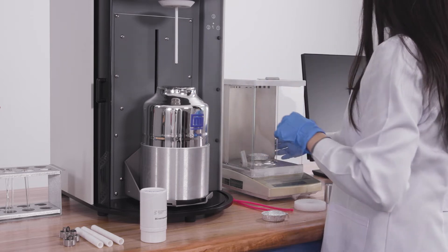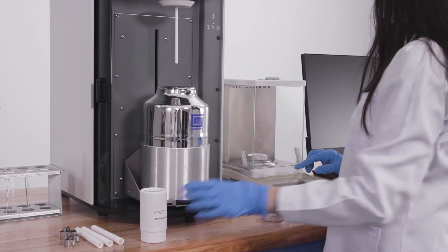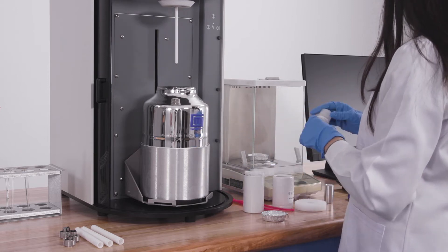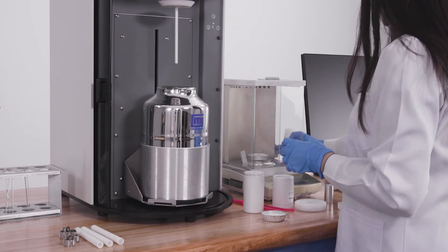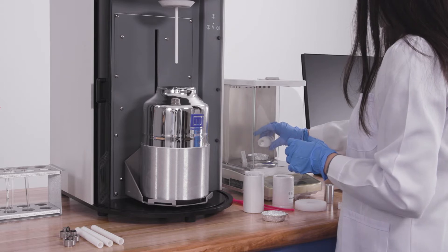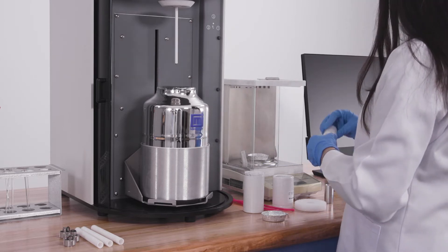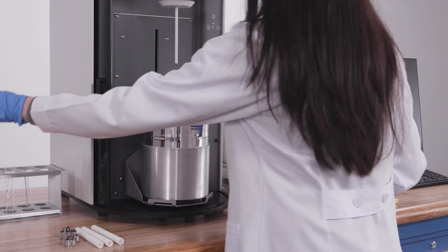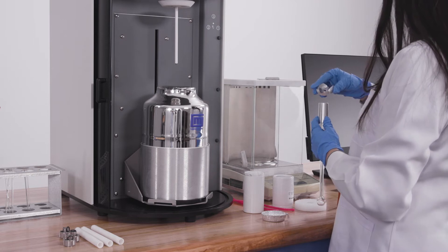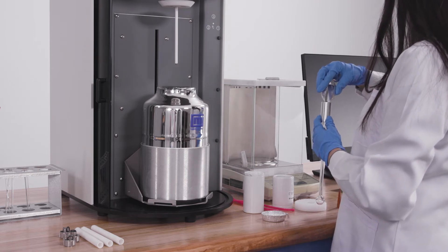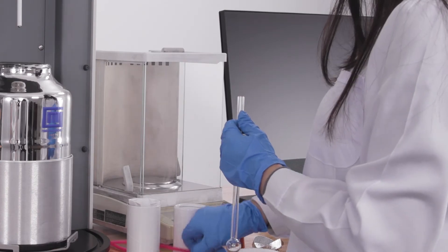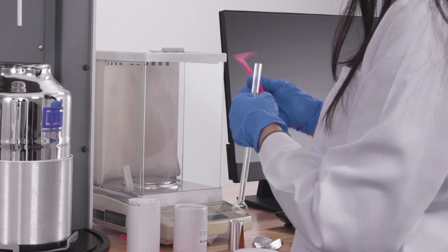Weigh between 0.2 and 0.3 grams on a weighing dish and transfer the sample into the sample tube using a funnel. Clean the walls of the sample tube with pipe cleaners as necessary.